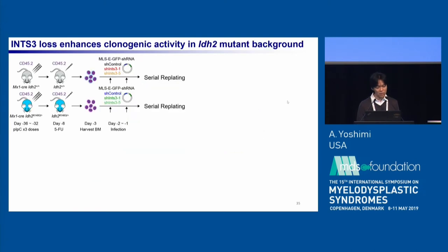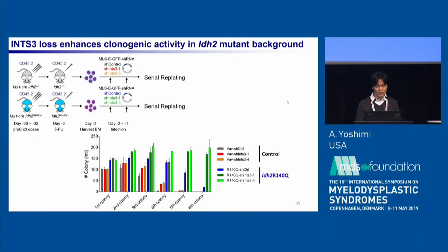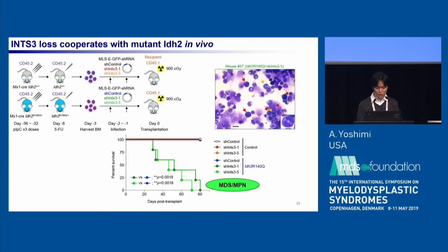We also analyzed the effect of INT3 depletion in IDH2 mutant primary mouse bone marrow. In the serial replating assay, IDH2 mutant INT3-depleted cells had enhanced clonogenic activity. In the bone marrow transplantation assay, these cells caused lethal hematopoietic MPN, as we observed in IDH2 and SRSF2 double mutant mice.